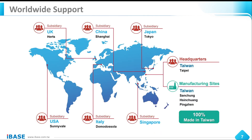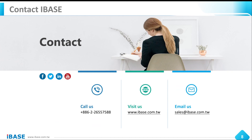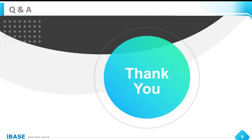For worldwide support, iBase has six subsidiaries across the globe: UK, China, Japan, USA, Italy, and Singapore. iBase headquarters is in Taipei, Taiwan, and all products are 100% made in Taiwan with manufacturing facilities in three locations. If you have any questions, you can contact iBase by phone, visit our website at www.ibase.com.tw, or send inquiries by email to sales@ibase.com.tw. Thank you very much for your time.